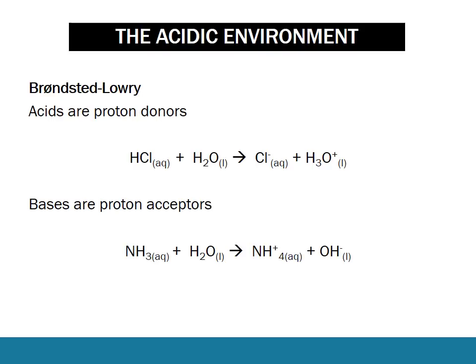As an example of a Bronsted-Lowry acid, in the top equation hydrogen chloride donates a hydrogen ion to water, whereas in the bottom equation ammonia gains a hydrogen atom from the water. This also shows the amphoteric nature of water, because it can both donate and accept a proton.